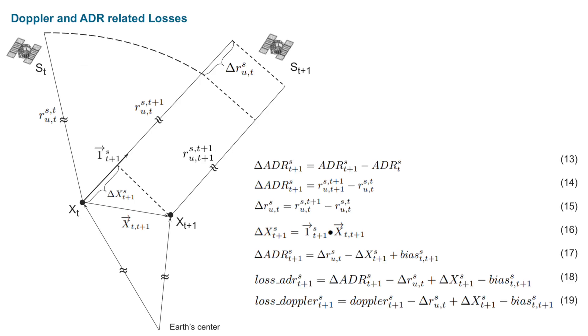In this slide, I will introduce the constraints of ADR. In equation 13, delta ADR is the delta for the ADR from time t to time t plus 1. The value is equal to the distance to the satellite between two epochs as shown in equation 14.